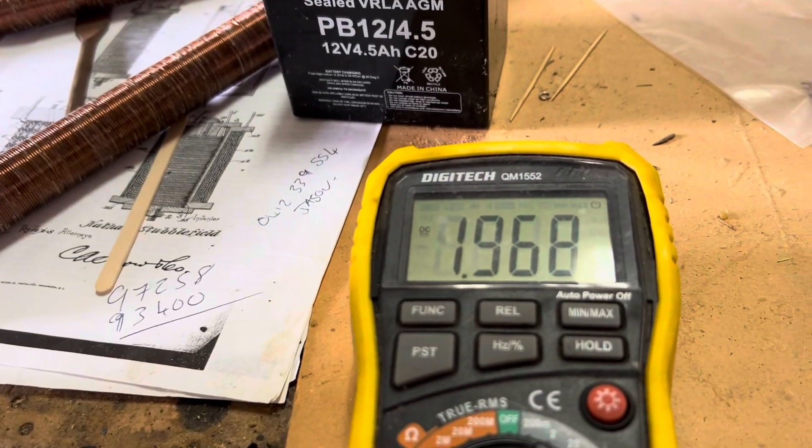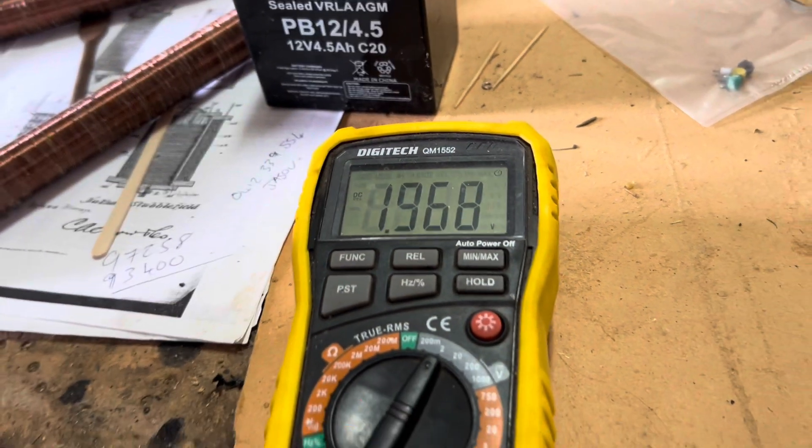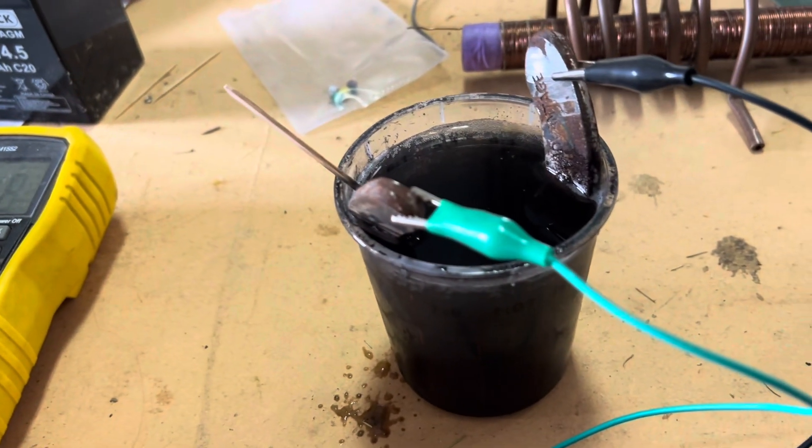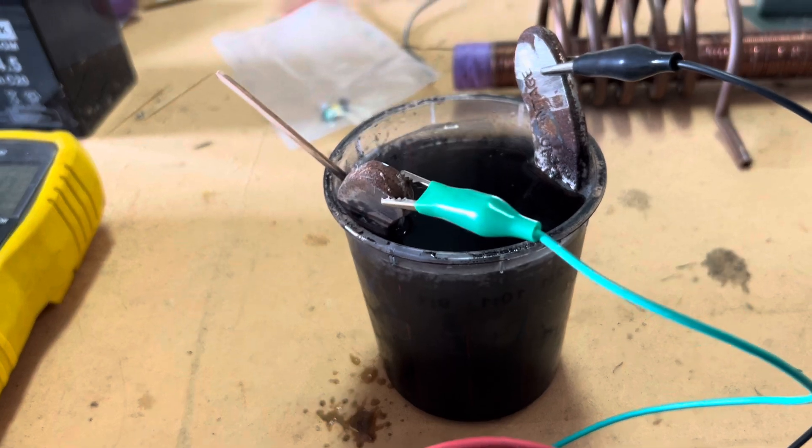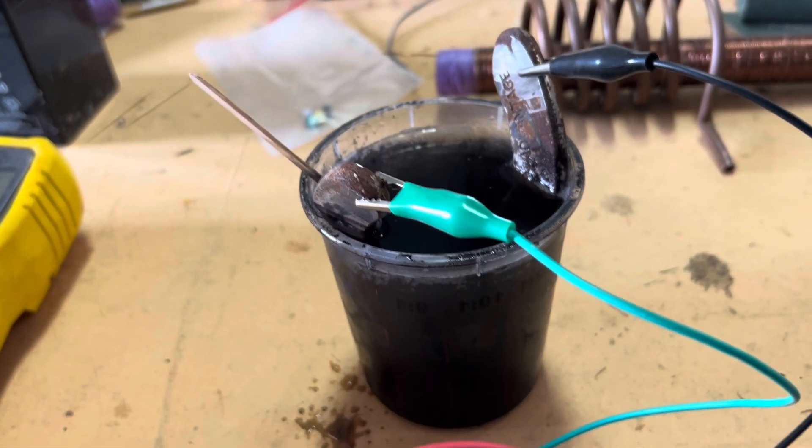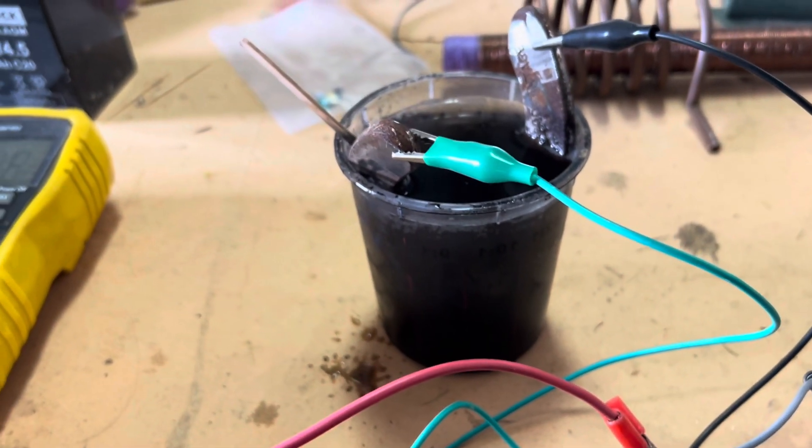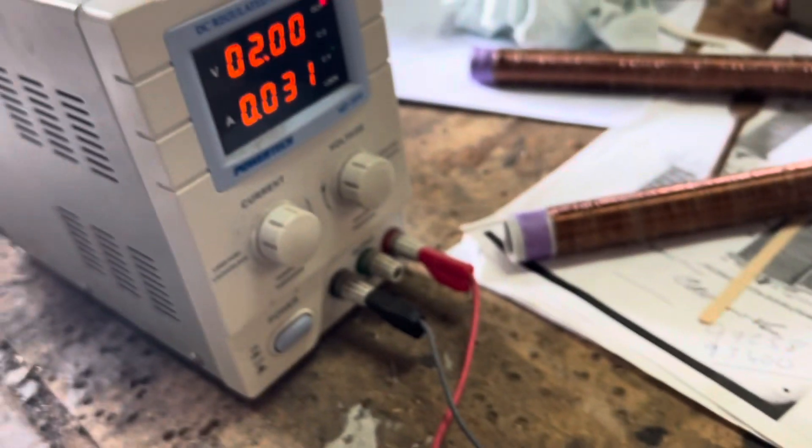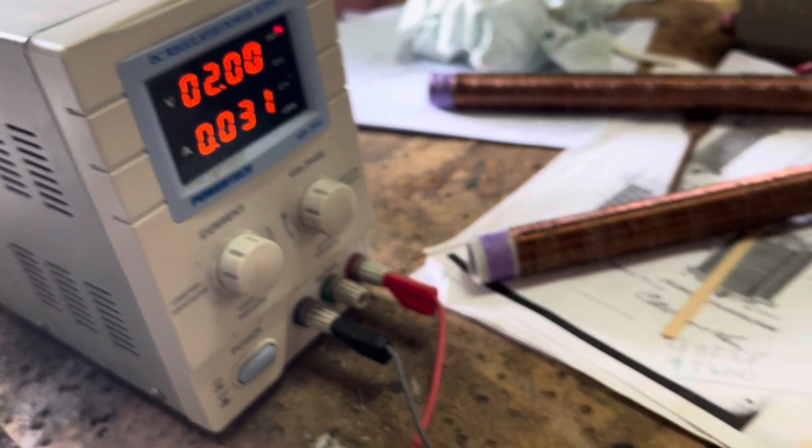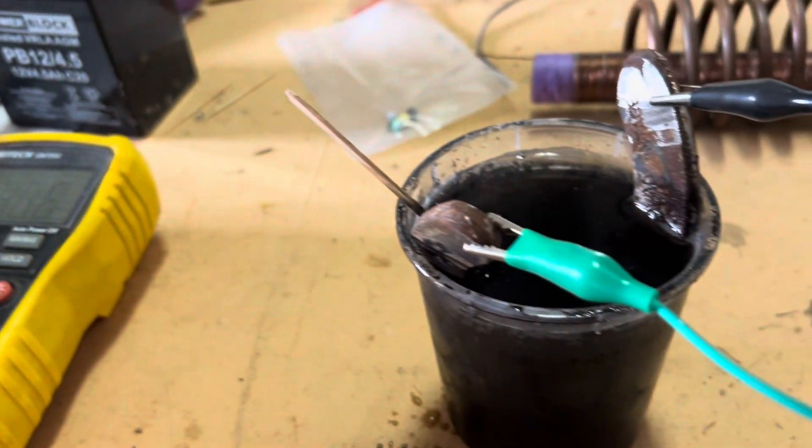So once again we can see that it is actually charging. I've got it connected to there. Maybe two volts is too high, not sure, it's all just an experiment. Yeah, so what I can do now is I can disconnect the power because that seems to have stabilized, and we'll just have a look and see what sort of voltage that we have there.